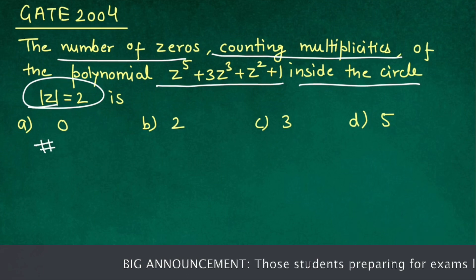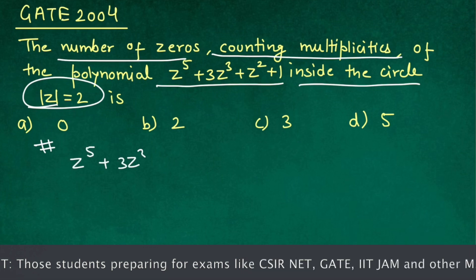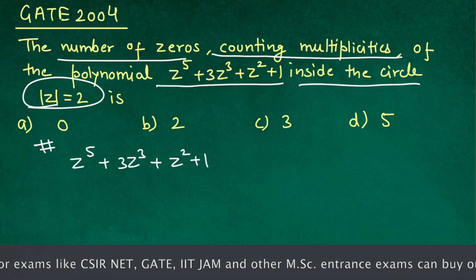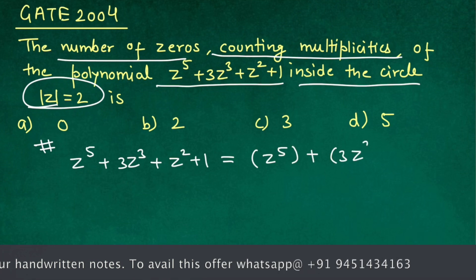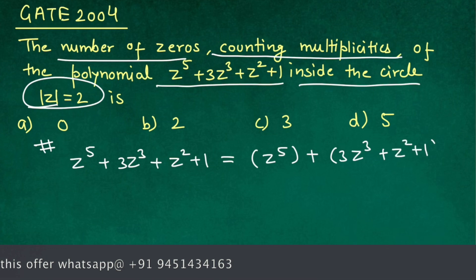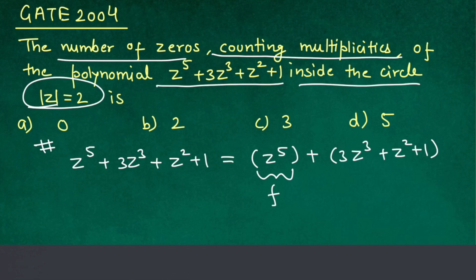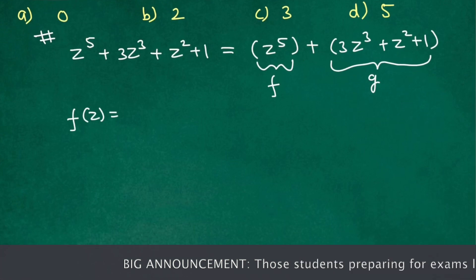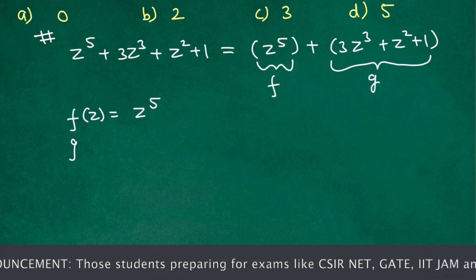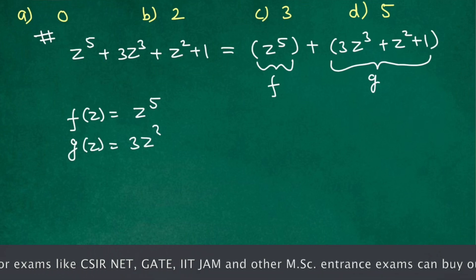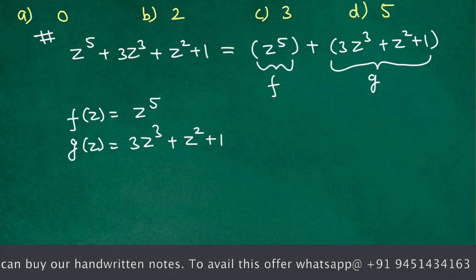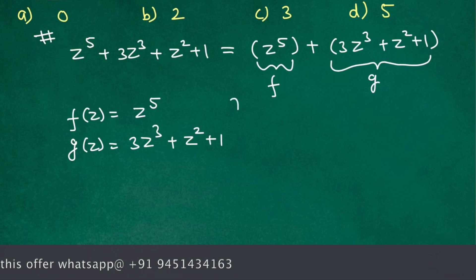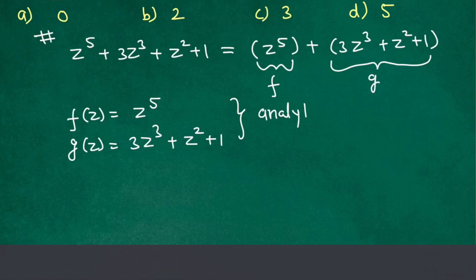We have the function z⁵ + 3z³ + z² + 1. We split this as f(z) plus g(z), where f(z) = z⁵ and g(z) = 3z³ + z² + 1. Since polynomial functions are always analytic, both functions are analytic inside the circle |z| = 2, so the second condition of Rouché's theorem is satisfied.